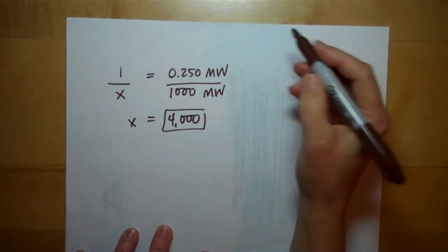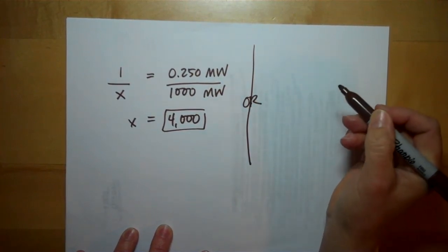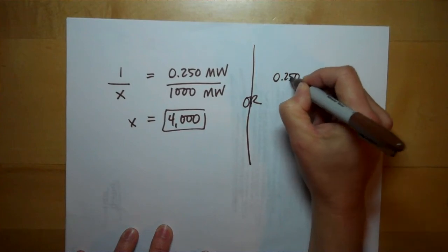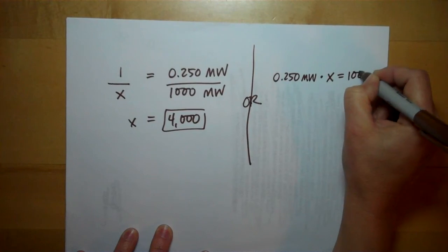The other way you could do it is you could set it up like a little algebra problem. You could say .25 megawatts times what is going to equal 1,000.